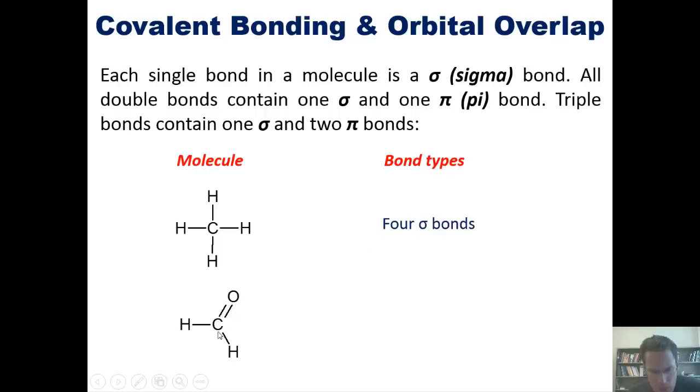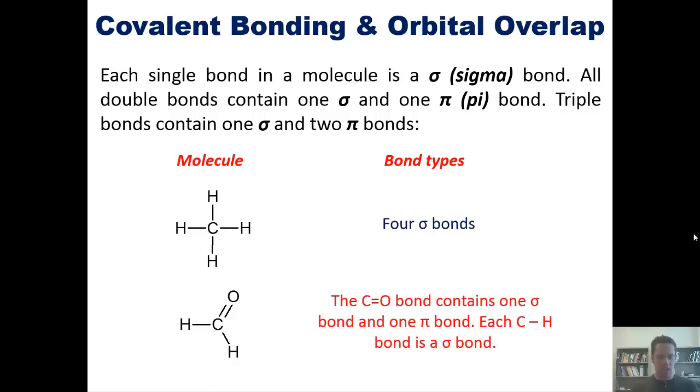Now by comparison, this molecule called formaldehyde has a carbon-oxygen double bond and then two separate carbon-hydrogen single bonds. In this molecule, the carbon-oxygen double bond contains one sigma and one pi bond, while each carbon-hydrogen bond is a sigma bond. Therefore, this molecule in total has three sigma bonds and one pi bond. And just by way of review, the bond angles around methane's hydrogens should be 109.5, while the bond angles around the central carbon should be about 120.